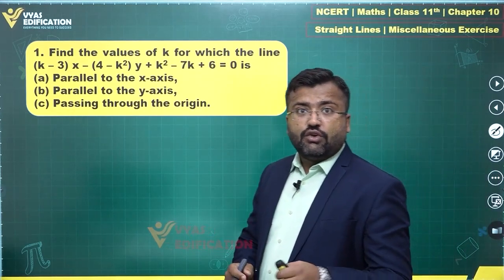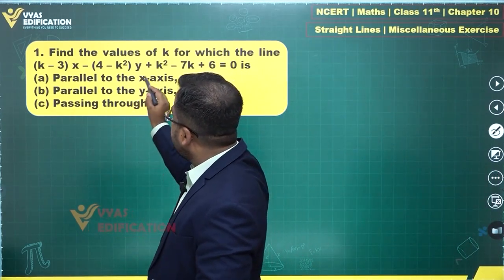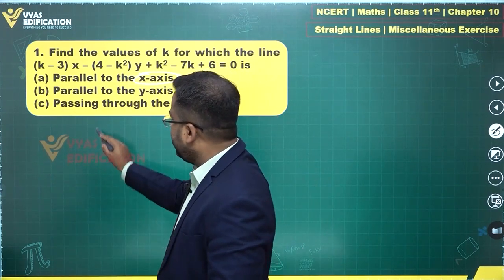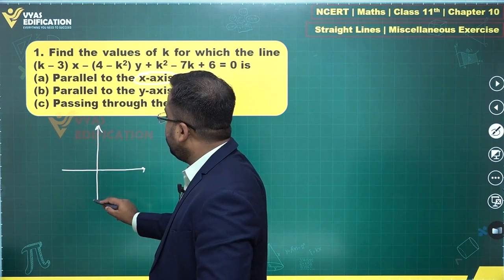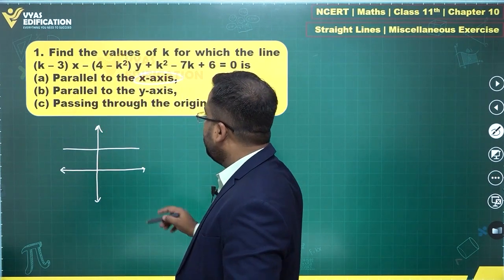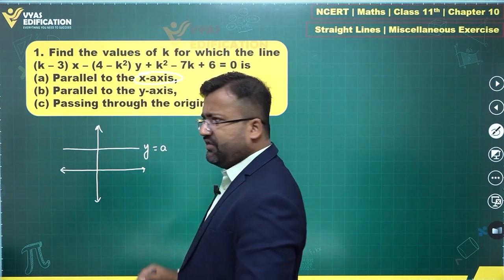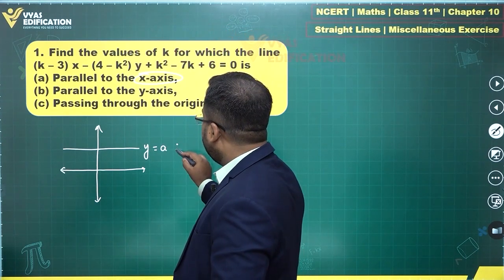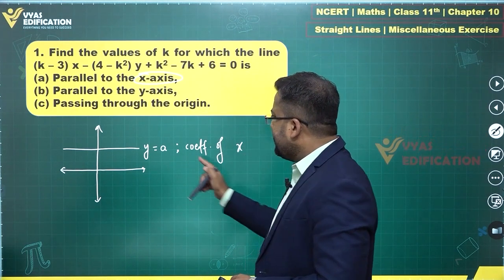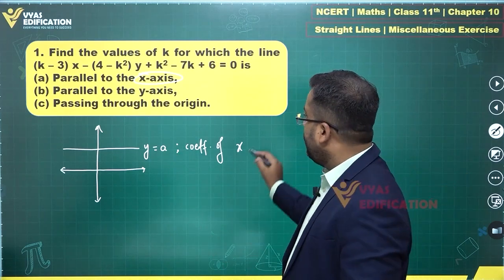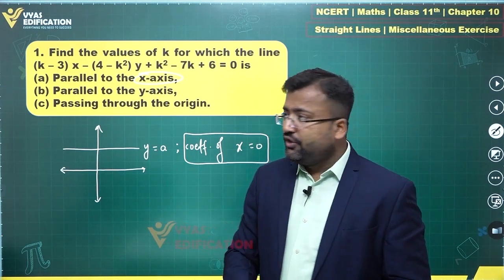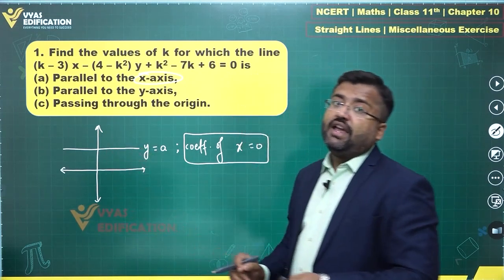For solving this question, what does a line parallel to the x-axis look like? A line parallel to the x-axis has an equation of the form y = constant. If you observe, the coefficient of x is 0 — there is no term of x. That is the condition we apply to get a line parallel to the x-axis.